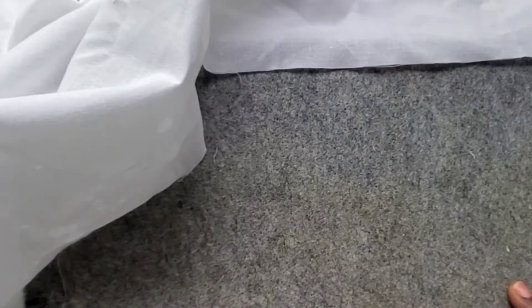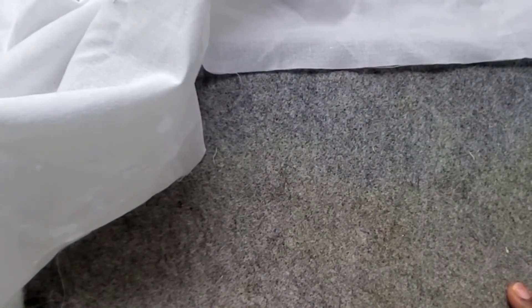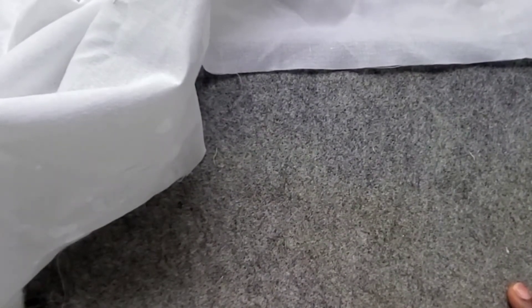Before I start, I use fusible interfacing and it's Pellon SF101. What that is, is it gives your fabric a little bit of body - it makes it a little bit stiffer. How you can tell which one is the other side when you feel it is like this bubbly rough kind of feeling, and that is the glue side.